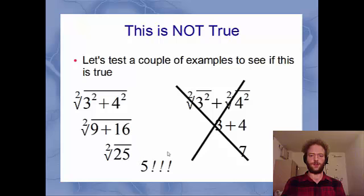So that's the correct way. But if we split into the square root of the 3 squared plus the square root of 4 squared, which is what a lot of people might do, maybe 20% or so, then it's 3 plus 4, which is 7. So we can't do that. It's not the correct way.